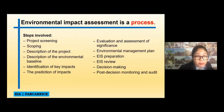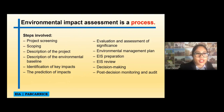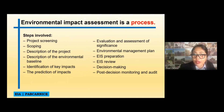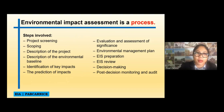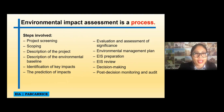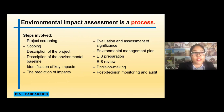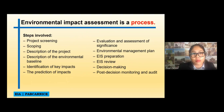These are the steps involved in the EIA assessment: first is project screening, then scoping, description of the project, description of the environmental baseline, identification of key impacts, prediction of the impacts, evaluation and assessment of the significance of these impacts, the environmental management plan stating how we can mitigate these impacts, the EIS preparation, the EIS review which is done by the DENR-EMB, the decision making, and the post-decision monitoring and audit.